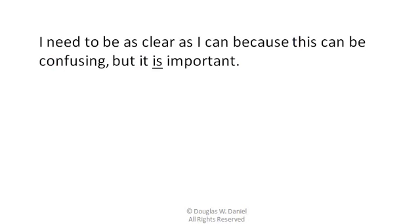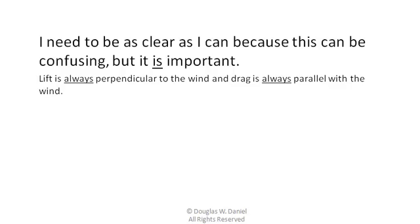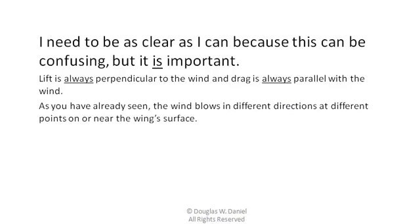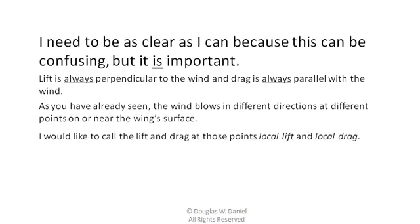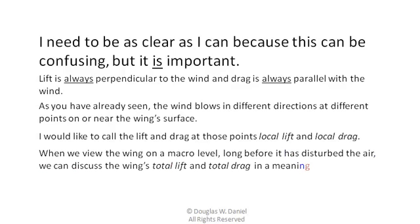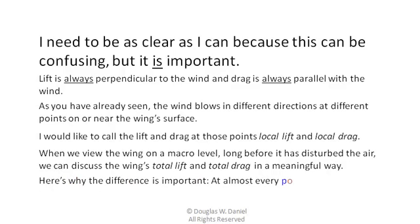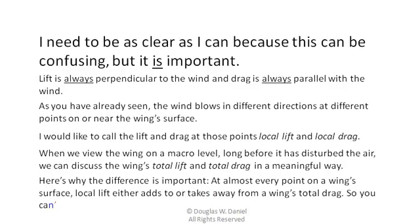I need to be as clear as I can because this can be confusing and it is important. Lift is always perpendicular to the wind and drag is always parallel with the wind. The wind blows in different directions at different points on or near the wing surface. I would like to call the lift and drag at those points local lift and local drag. When we view the wing on a macro level, long before it has disturbed the air, we can discuss the wing's total lift and total drag in a meaningful way. At almost every point on a wing surface, local lift either adds or takes away from the wing's total drag, so you can't just add up all the local lift and say that's the total lift.